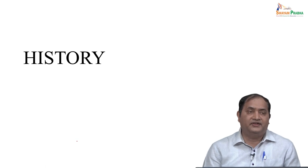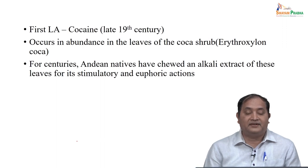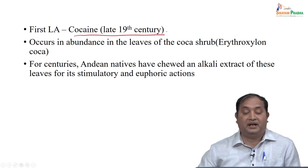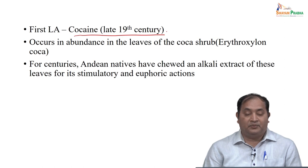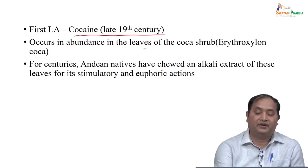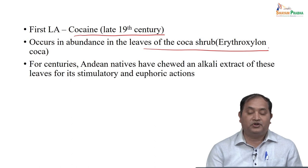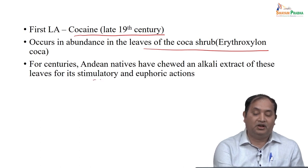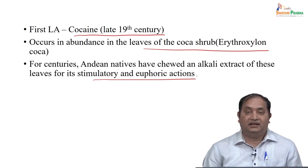Looking back at history, how people started using local anesthetics — the first local anesthetic used was cocaine. As you know, cocaine is now a narcotic and a banned drug, used in the late 19th century. Historically, it occurred abundantly in the leaves of the coca plant — Erythroxylon coca — and people used to chew this alkaloid extract for stimulatory and euphoric action, obtaining numbness of the tongue.